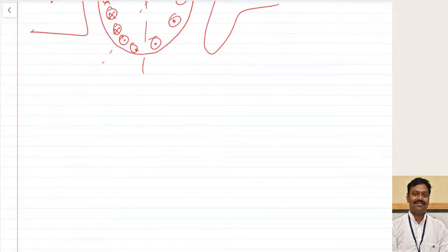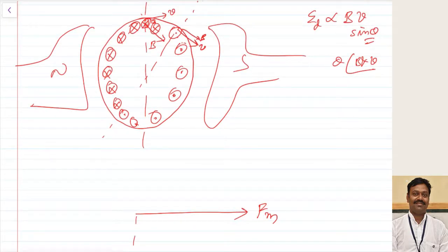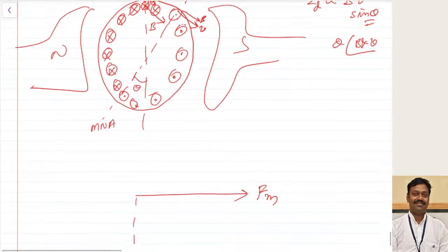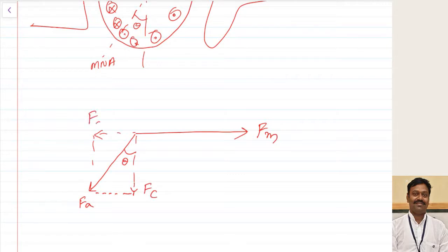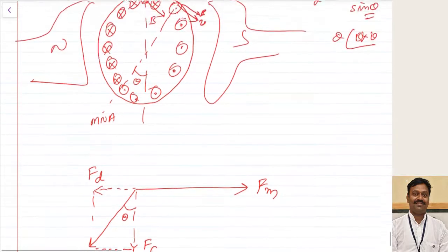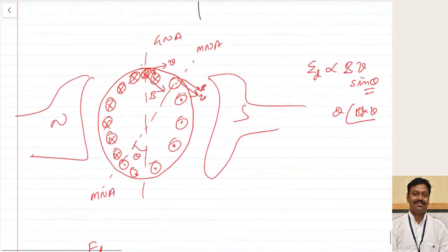Let us see the effect of this. This is the main field MMF. The armature MMF — applying the right-hand thumb rule where the curled fingers indicate direction of current and the thumb indicates direction of magnetic field — will point downwards, inclined at angle theta from the geometrical neutral axis, directed towards the magnetic neutral axis. This armature MMF can be resolved into two components: one in phase with the main field flux (cross-field component FC), and one in the opposite direction (demagnetizing component FD), which decreases the net flux.